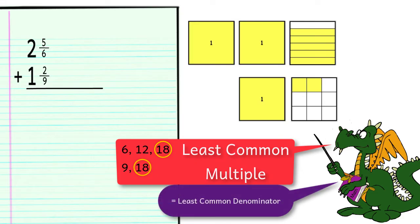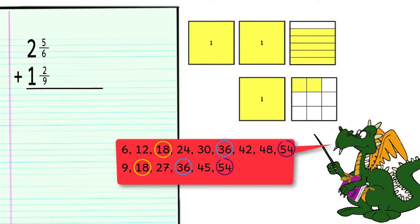Clearly, this is not the only possible common denominator. There are others, such as 36 and 54. But using these will only lead to having to simplify the answer later. Therefore, we will use 18 as our denominator for both fractions.